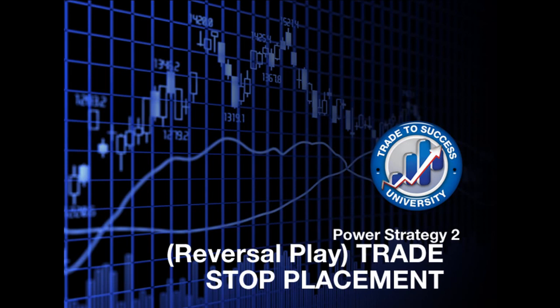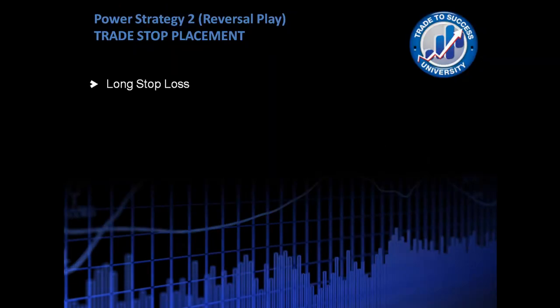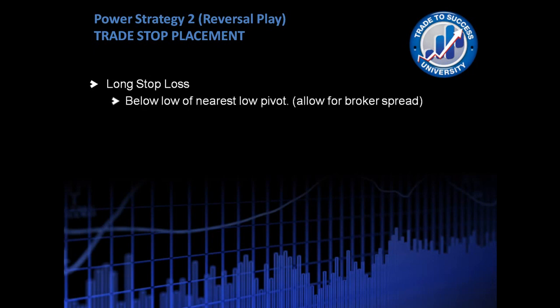Hi, Kumail Korshaw here. Now we're going to be going over Strategy 2 stop loss placement. We're going to first look at the long stop loss, meaning the stop loss that we're going to be placing on our long trade. The stop loss for a long trade will go below the low of the nearest low pivot.